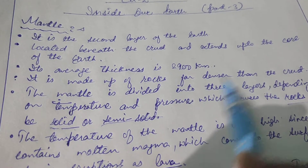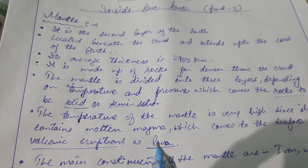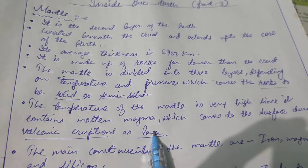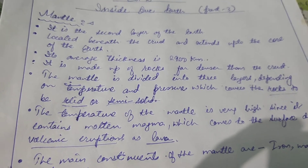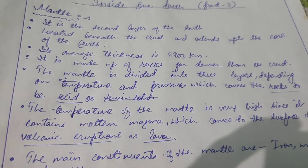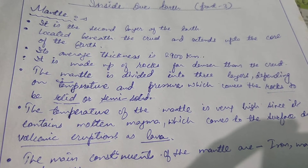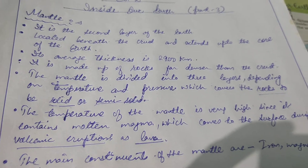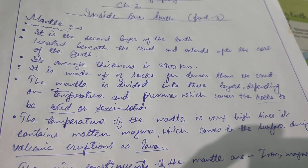The temperature of the mantle is very high since it contains molten magma, which comes out to the surface during volcanic eruption as lava. Whenever volcanic eruption takes place, the lava comes out from the mantle. This means that the rocks found in that layer are in a molten or semi-solid state, and this happens due to extreme heat.